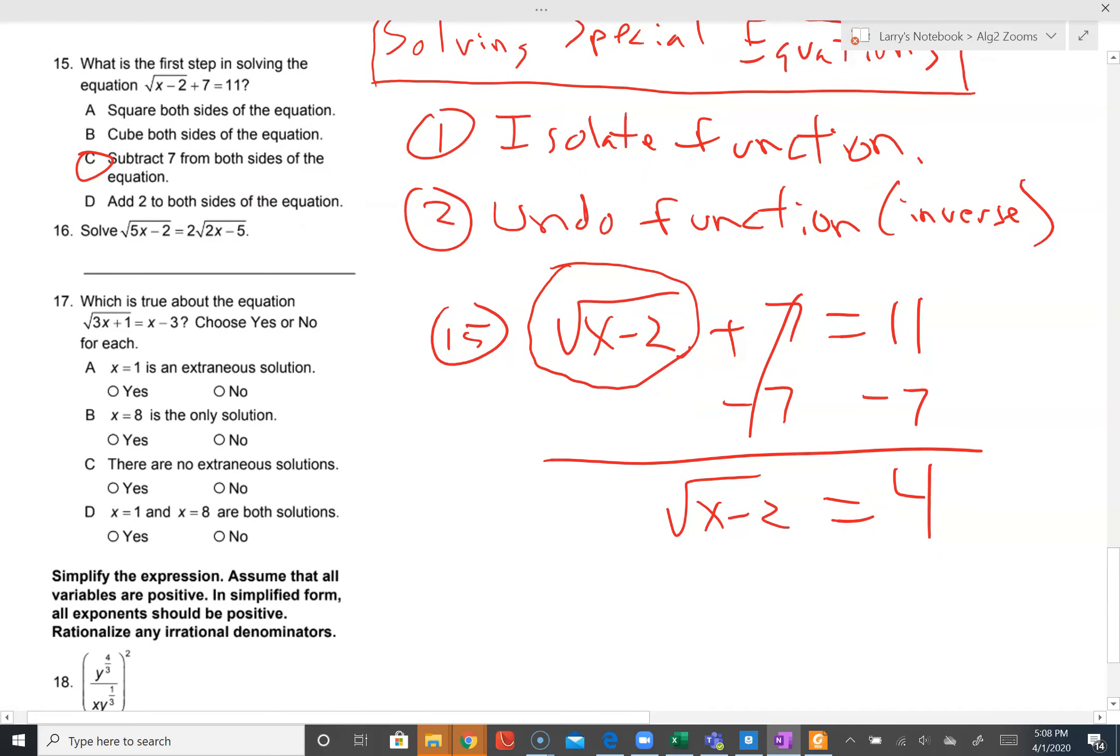Step two, undo the function. To undo this function, we would square on both sides. The squaring cancels with the square root to leave x minus two equals four squared is 16. Lastly, we add two on both sides, x equals 18. Eighteen minus two is sixteen, square root of sixteen is four, four plus seven is eleven. That's a true statement. X equals eighteen is a solution, the only solution.